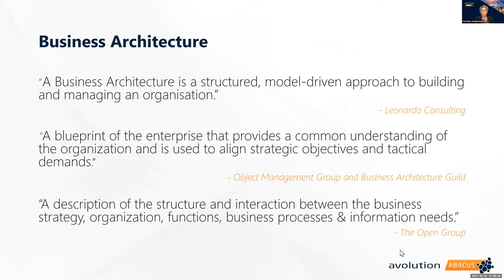The third definition is from The Open Group. For those of you who are TOGAF certified as I am, business architecture is a description of the structure and the interaction between the business strategy, organisation, functions, business processes and information needs. I quite often talk about enterprise architecture and business architecture being a people-oriented business. This third definition says to me that our role as enterprise and business architects is to describe structure and interaction and to help the rest of the business use these descriptions to show how things are interrelated within the organisation, so that we may achieve our business outcomes and strategies more effectively.